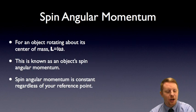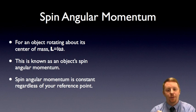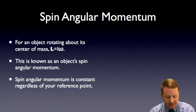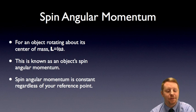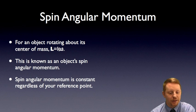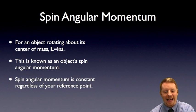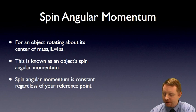Let's go a little bit more in depth and talk about spin angular momentum. For an object that's rotating about its center of mass, the angular momentum is going to be I omega. That's known as an object's spin angular momentum — it's an intrinsic property of an object rotating about its center of mass. It's constant even if you calculate it relative to any point in space, but it has to be rotating about its center of mass. That's a very useful property.